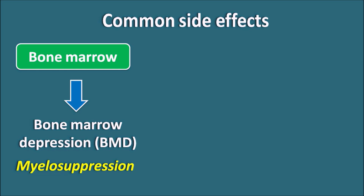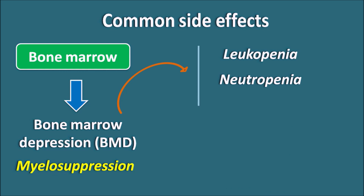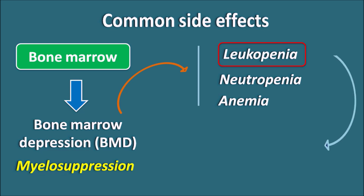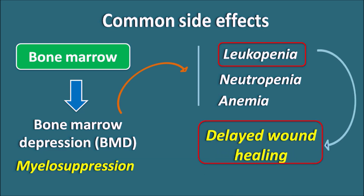With myelosuppression, depression of the bone marrow leads to a decrease in cells like leukocytes, causing leukopenia, as well as neutropenia — decreased neutrophil count — and anemia, since erythropoiesis is also inhibited. Leukopenia is very important because leukocytes fight against infections. Whenever leukopenia is caused by anti-cancer agents, it results in delayed wound healing, similar to what is observed in diabetic patients.